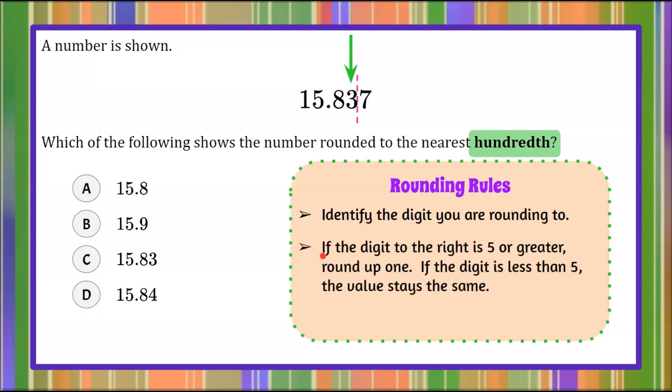we need to understand that if the digit to the right of the digit you're rounding to is five or greater, we round up one. If the digit is less than five, the value to the left of it stays the same.